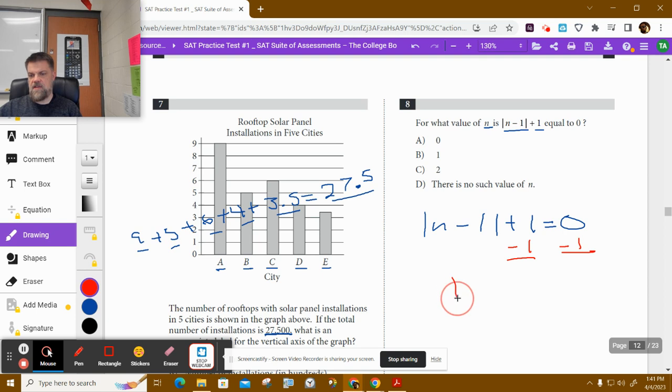And I get |n-1| is equal to negative 1. Can I ever have an absolute value equal negative 1?